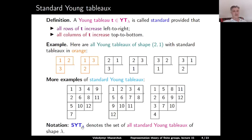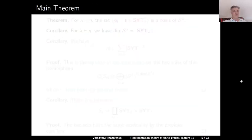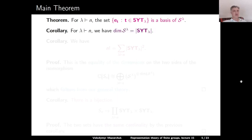Notation: Syt_lambda denotes the set of all standard Young Tableaus of shape lambda. Now we are ready to formulate our main theorem. For any partition lambda of n, the set of all polytabloids indexed by standard Young Tableaus forms a basis of the Specht module S^lambda. An immediate corollary is that the dimension of the Specht module S^lambda equals the cardinality of the set of standard Young Tableaus of shape lambda.